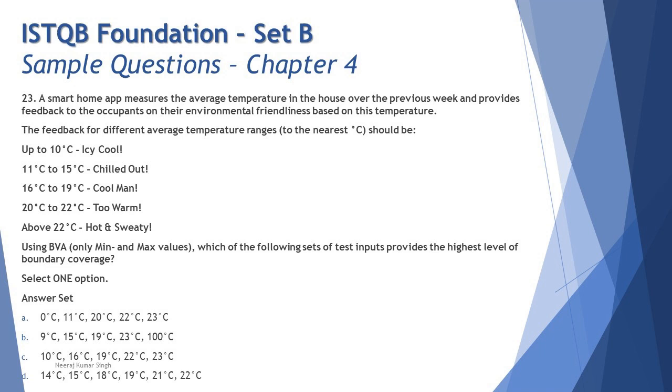A smart home app measures the average temperature in the house over the previous week and provides feedback to the occupants on their environmental friendliness based on this temperature. The feedback for different average temperature ranges to the nearest degree Celsius should be - these are various ranges where you can see up to 10 degrees, 11 to 15, 16 to 19, 20 to 22, but the last one says above 22, that means 23 and more.